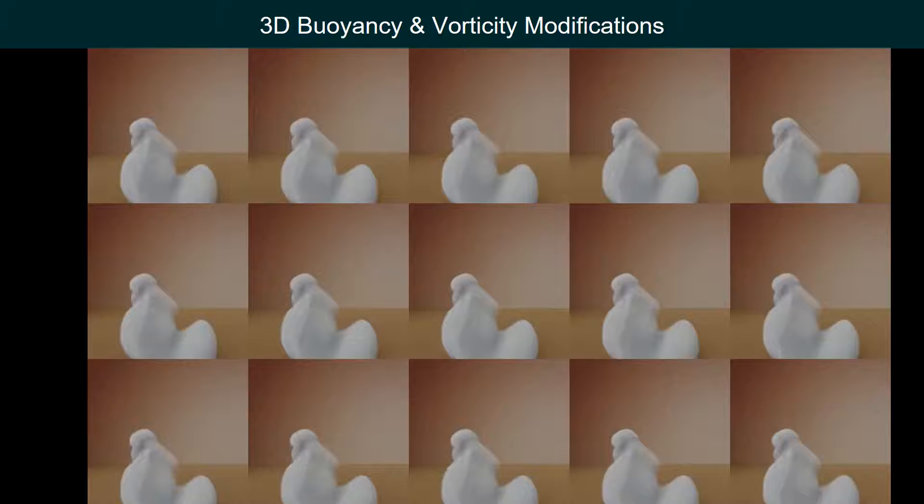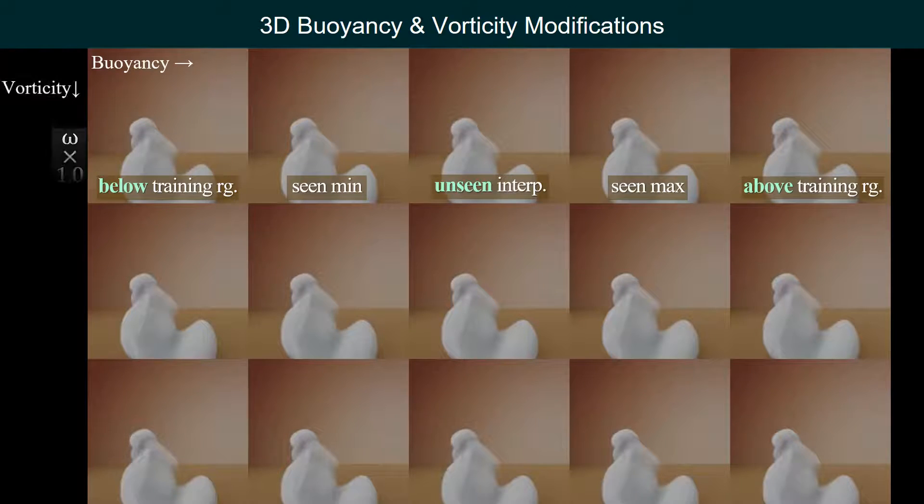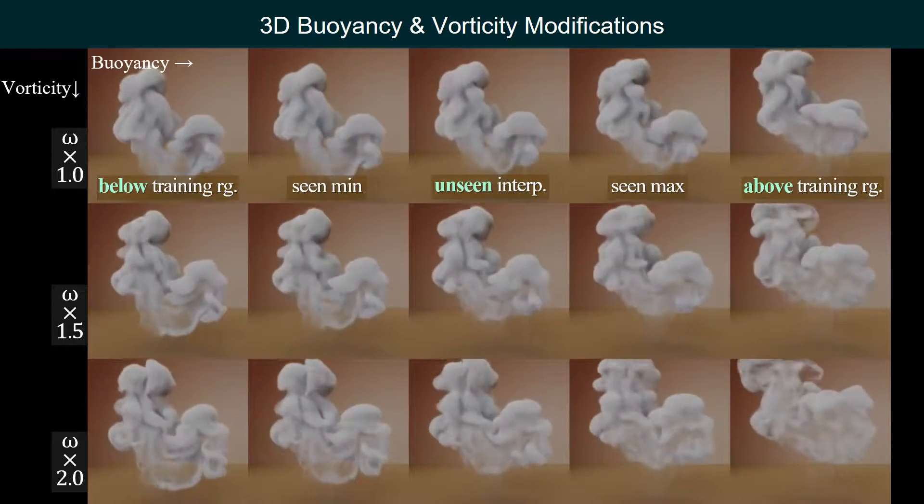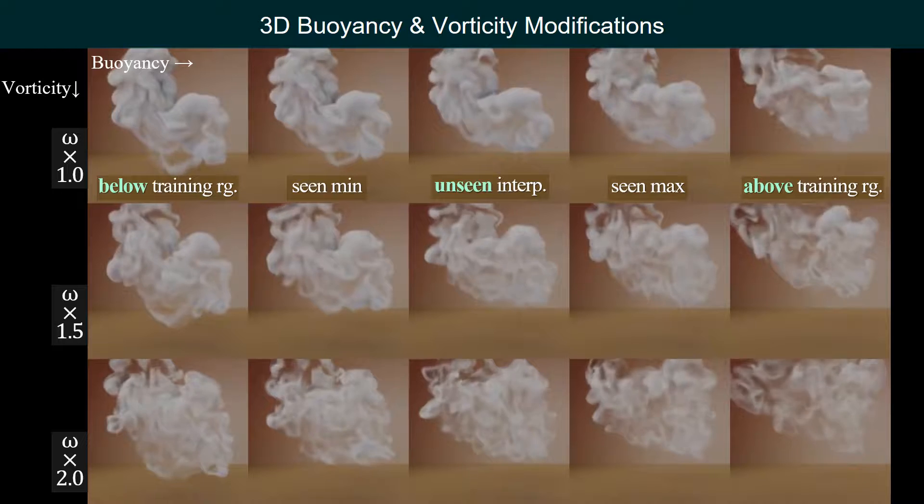In this table with 3D results, buoyancy increases from column to column and vorticity is enhanced row by row. Our model works sensitively in a wide range of parameter settings.